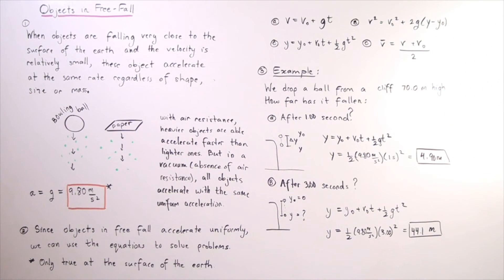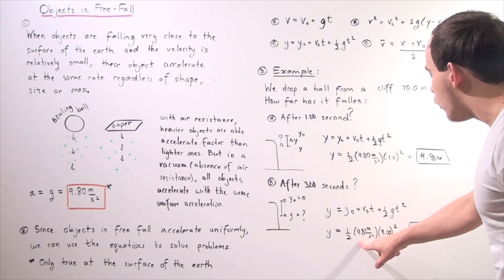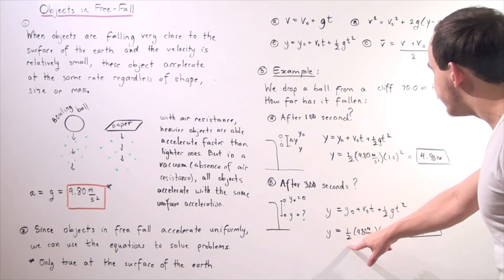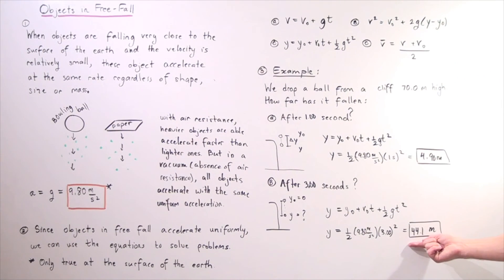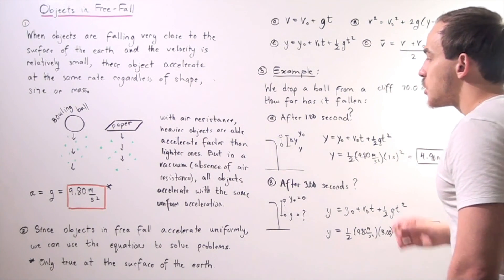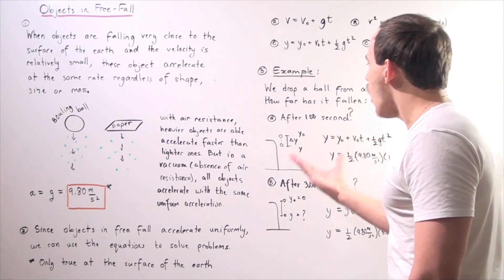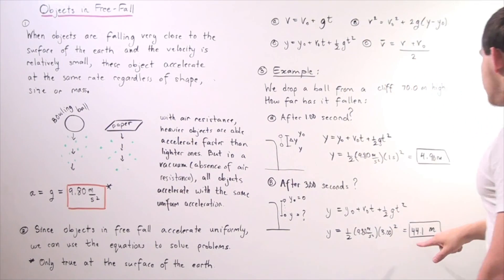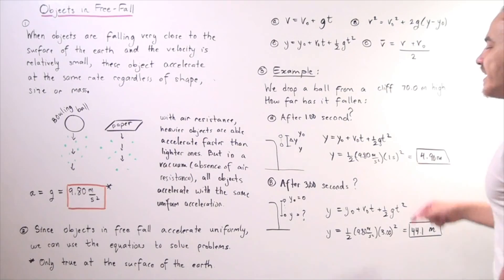What about after three seconds? We use the same exact formula except now instead of plugging in one second, we plug in three seconds. So now we get nine times 9.8 times 0.5, we get 44.1 meters. So after three seconds, our ball has fallen a distance of 44.1 meters.